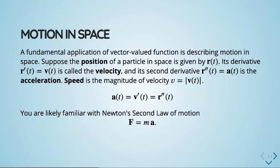The derivative of velocity is acceleration, which is used in Newton's second law: F = ma. The force is proportional to the acceleration; the constant of proportionality is the mass. In vector language, m is a scalar — things have mass, not mass in a direction — while acceleration is a vector. That was a semester of physics in one slide.